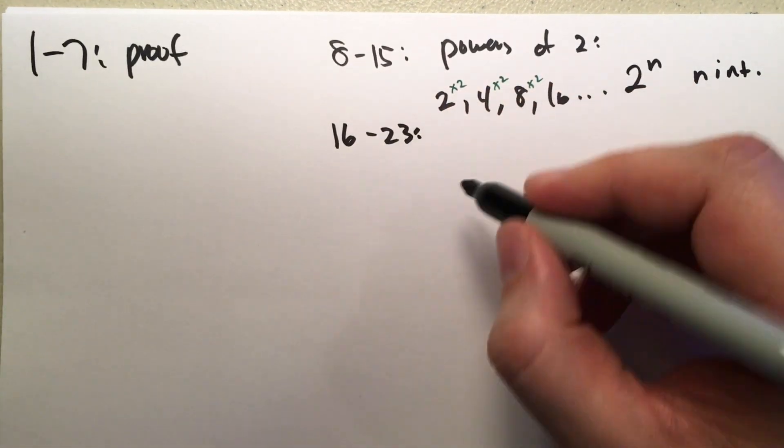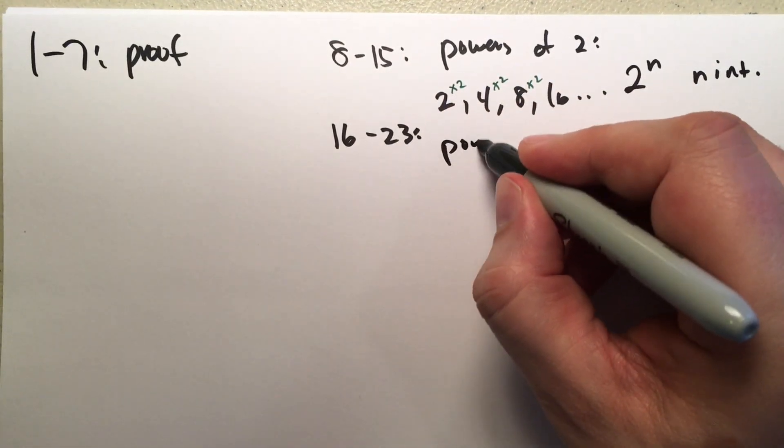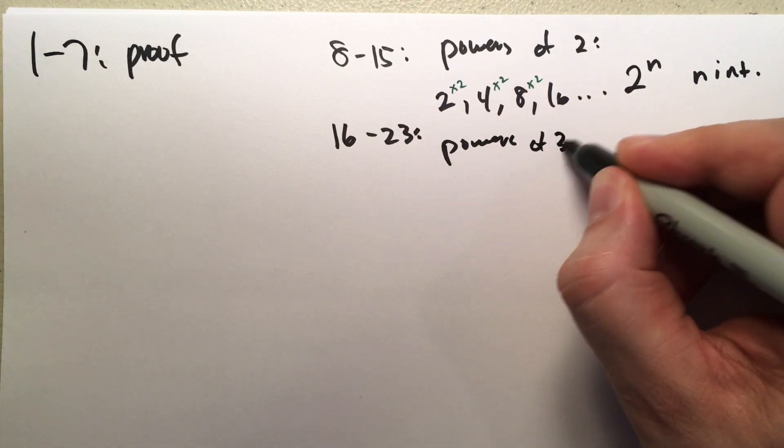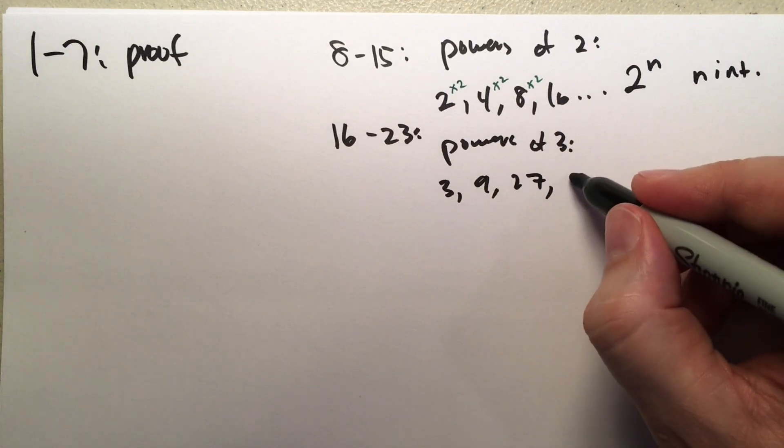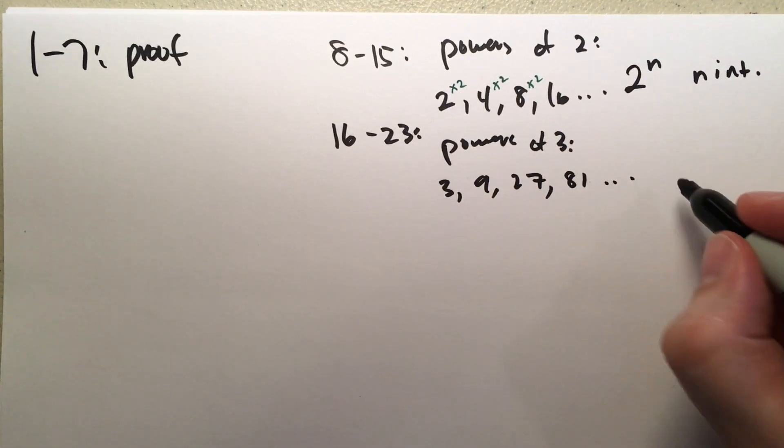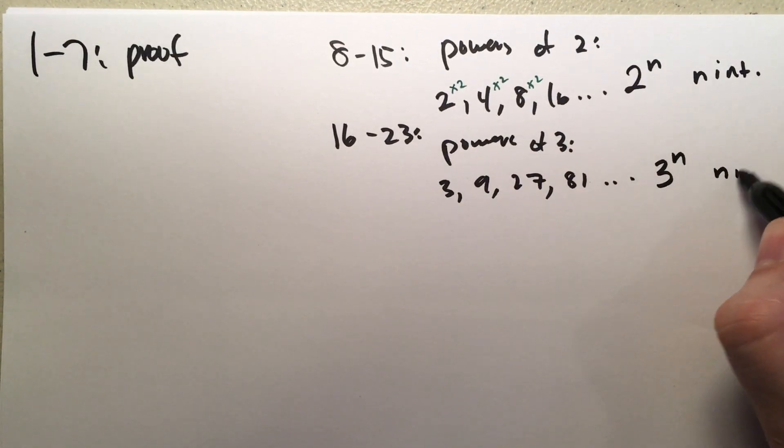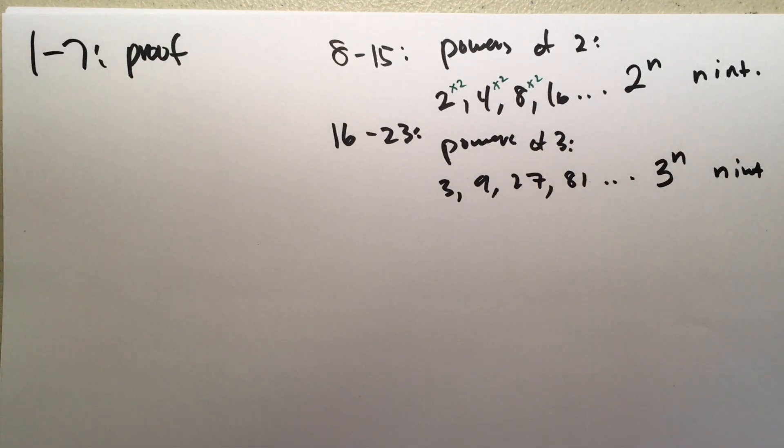And for problems sixteen through twenty-three, basically powers of three are three, nine, twenty-seven, and eighty-one. So, it's like three to the n where n is an integer. So, you have to find the largest power of three that divides those numbers.